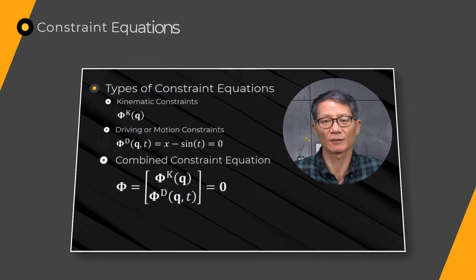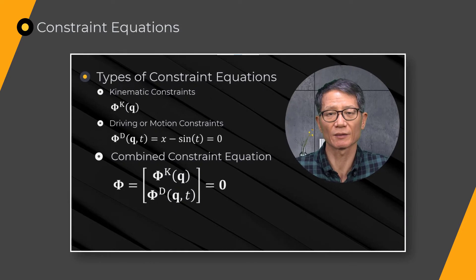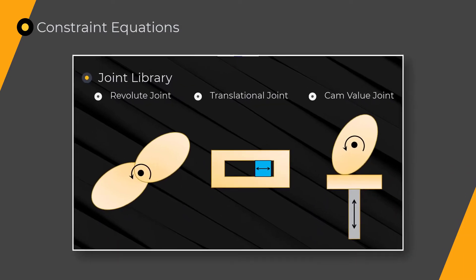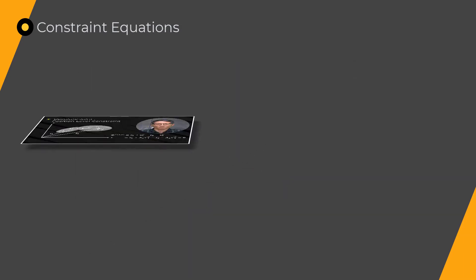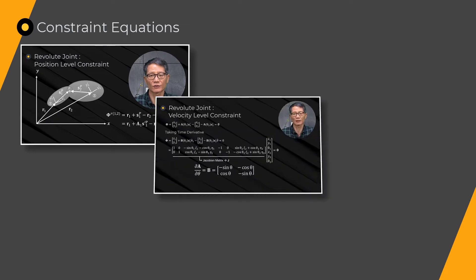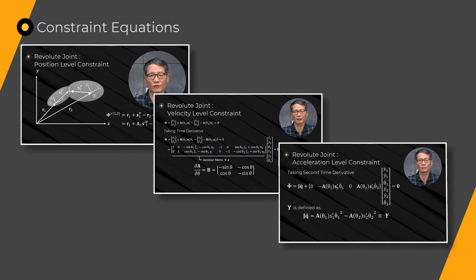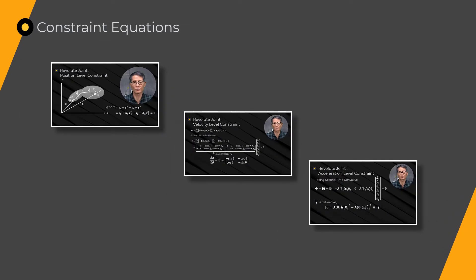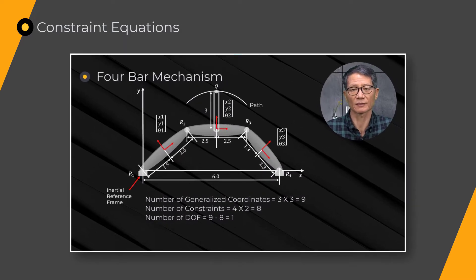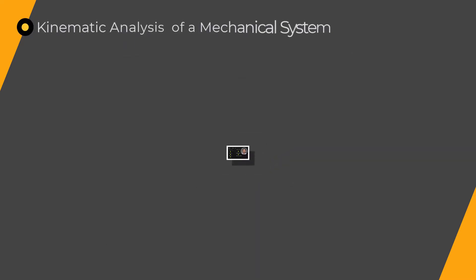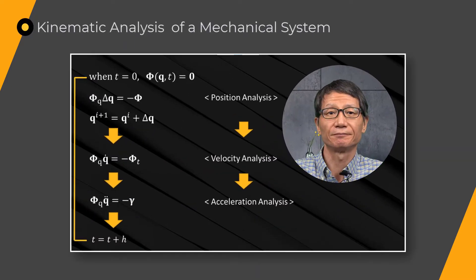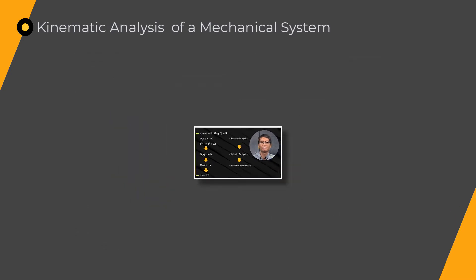Lesson 2 presents Constraint Equations, Joint Types, and Position, Velocity, and Acceleration Level Constraints of a Revolute Joint, as well as a 4-bar Mechanism.